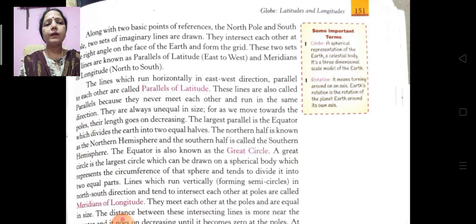The northern half is known as the northern hemisphere and the southern half is called the southern hemisphere. Northern means up and southern means down.